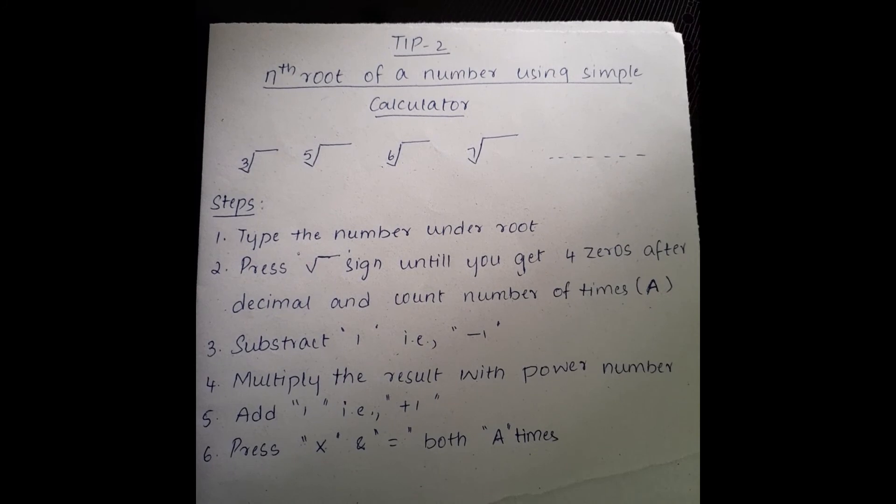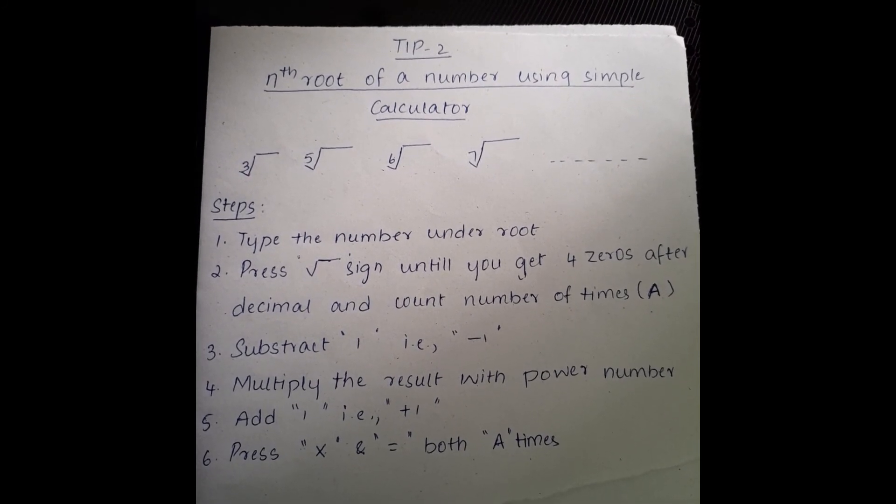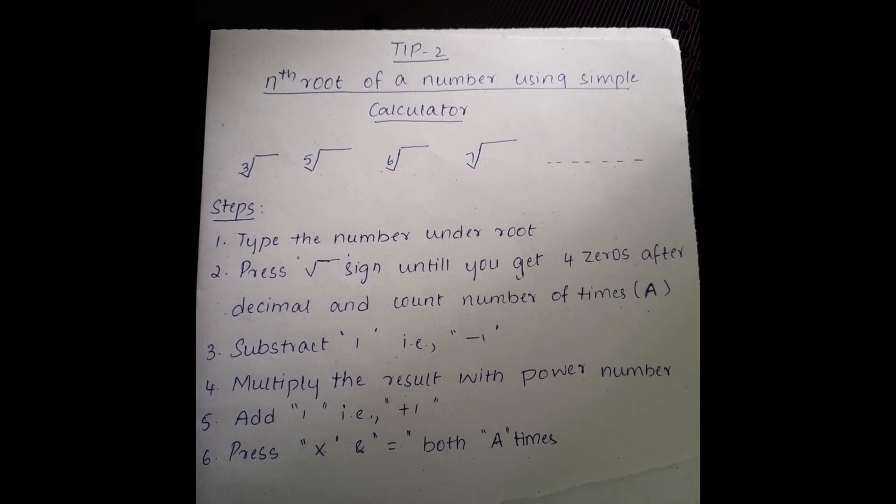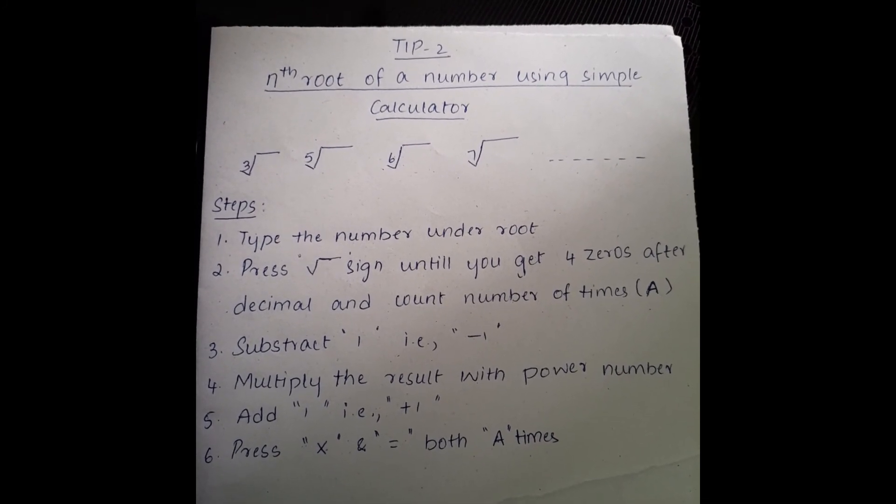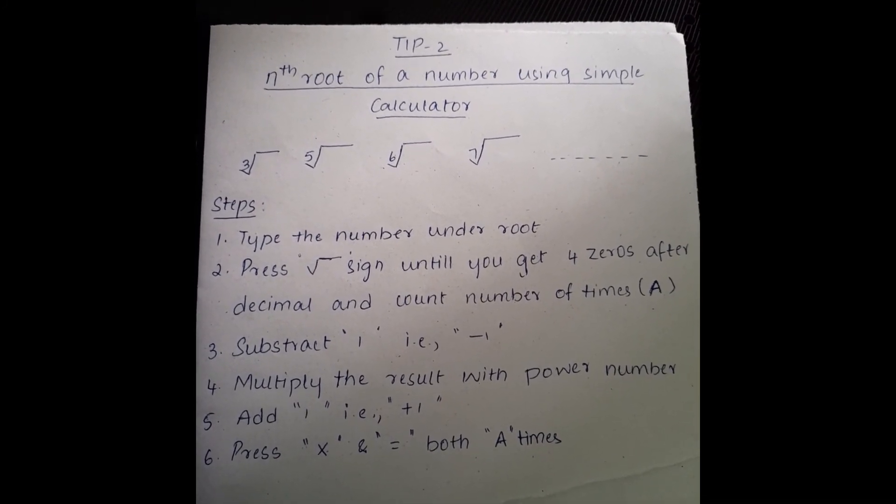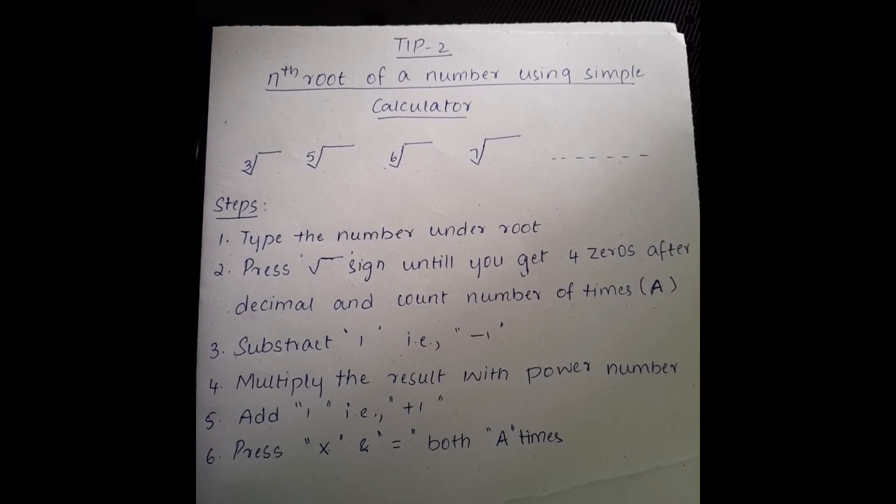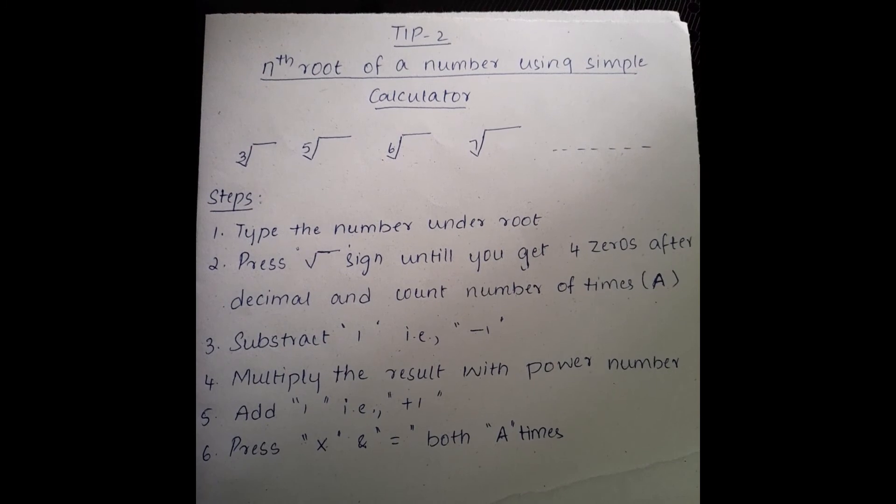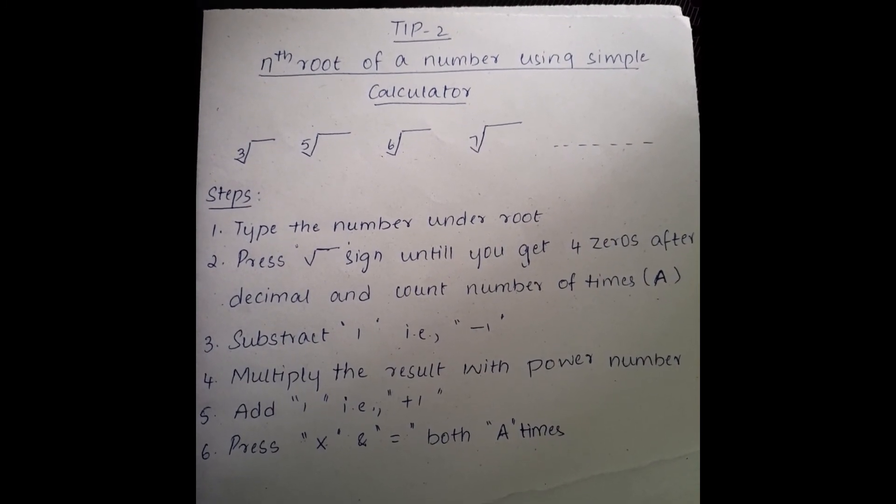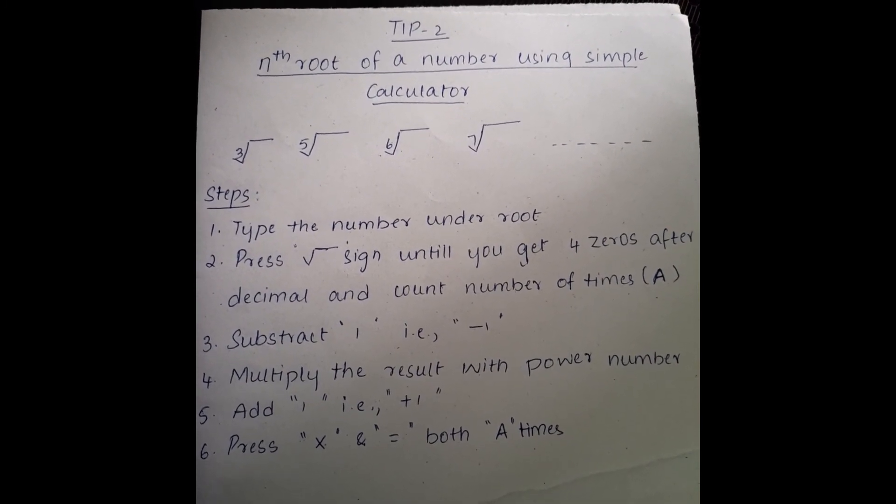Now, from the result, subtract 1, that is minus 1. And in the fourth step, multiply the result with the power. Suppose, if you are given cubed root of 10, then the power of 10 is 1 by 3. So, you need to multiply with 1 by 3.